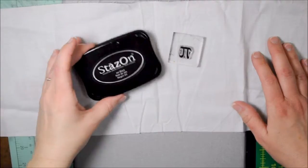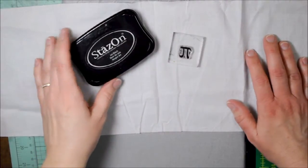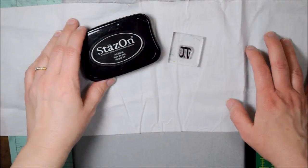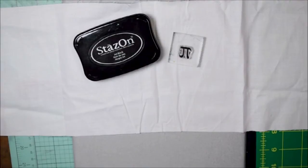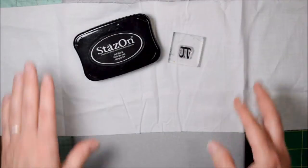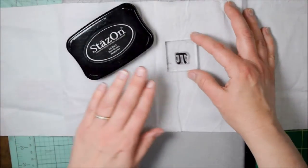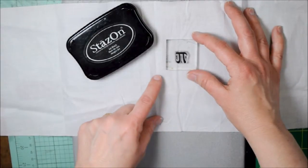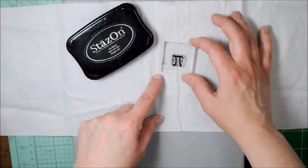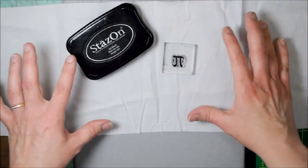For this project, I'm going to be using Stazon ink. I think it'll work best when stamping on the fabric. You might want to get some fabric ink or fabric paint, but this is what I'll be using. I'm also going to use the little pi symbol that comes with this set, and that's going to be my major background pattern.